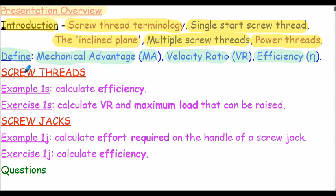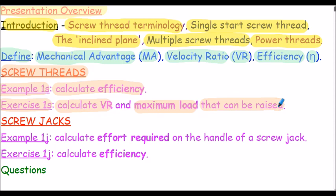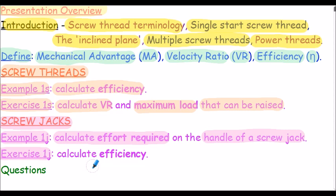Next we have some calculations related to screw threads. Example 1S requires us to calculate the efficiency of the screw thread, and exercise 1S requires us to calculate the velocity ratio and the maximum load that can be raised. Then we consider screw jacks. Example 1J has us calculate the effort required to be applied to the handle, and exercise 1J requires calculating the efficiency. The presentation concludes with questions for you to attempt at your own pace. Examples and exercises show full work solutions, but the questions are left for you to develop your own solutions.